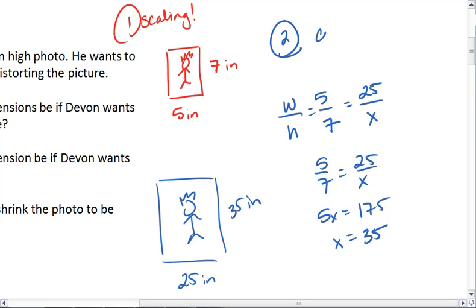This method is called the constant ratio, and it's because we use the constant ratio of width to height, which is 5 to 7.